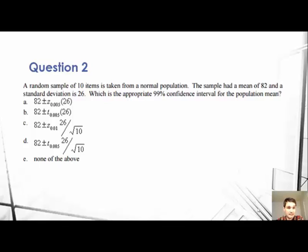So the question reads, a random sample of 10 items is taken from a normal population. The sample had a mean of 82 and a standard deviation of 26. Which is the appropriate 99% confidence interval for the population mean? And there's a series of answers.